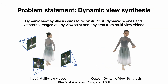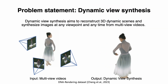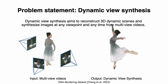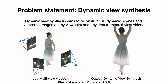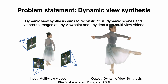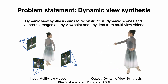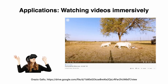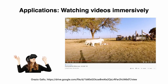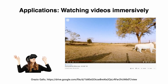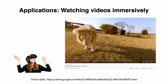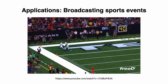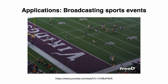Let me first explain what dynamic view synthesis is. The objective of dynamic view synthesis is to present new perspectives of real-world dynamic scenes given input videos. This technology has widespread applications in fields such as film and game production, immersive remote communication, among others. For example, using dynamic view synthesis technology, we can immerse ourselves in watching a video, and for sports events, we can generate videos with extremely cool free-viewpoint trajectories.